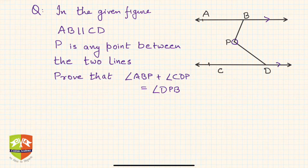You have to prove that angle ABP, that is x, plus angle CDP, that is y, equals angle DPB, that is z. So we have to prove this, or you can say x plus y equals z.